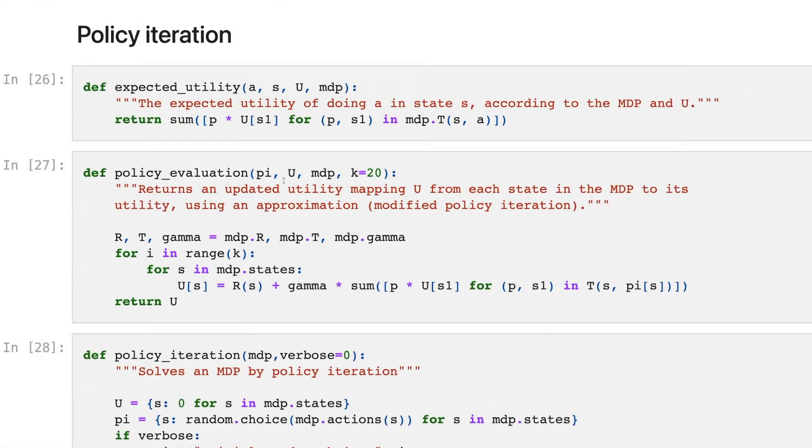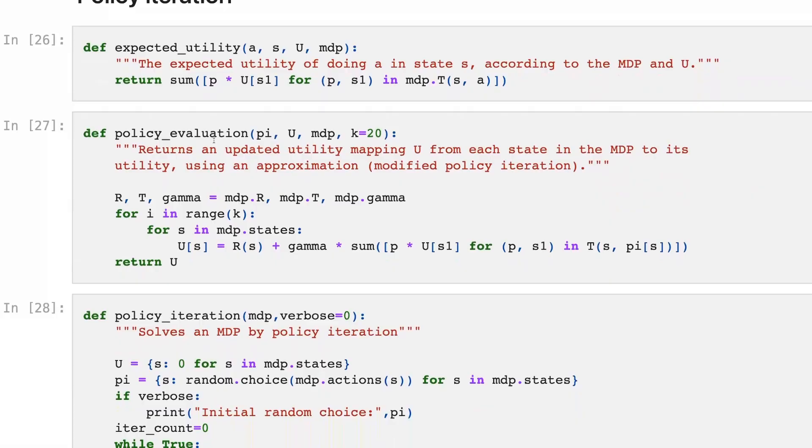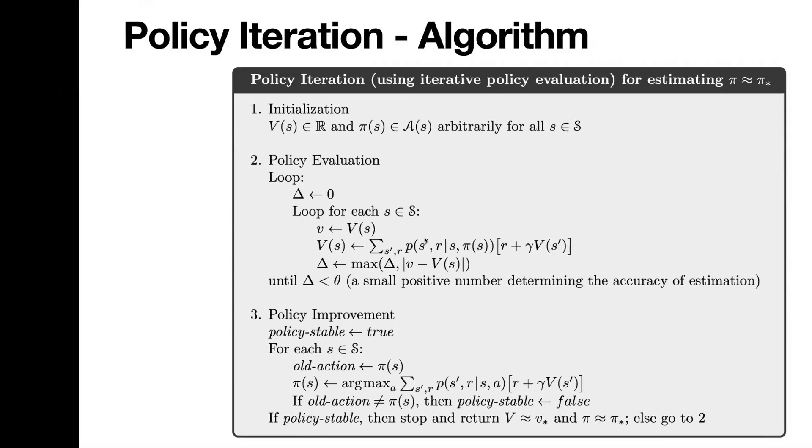Now let's check how it is implemented. There are two big parts. First is evaluation of the policy and second, improvement of the policy. Evaluation is essentially computation of state values for every state.